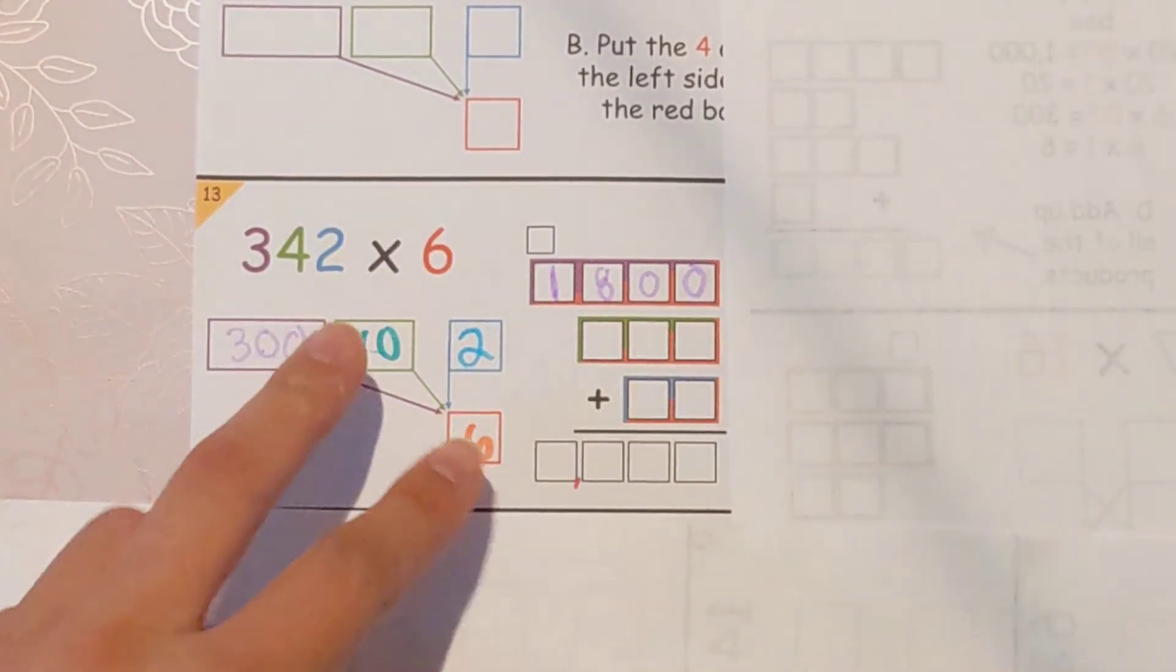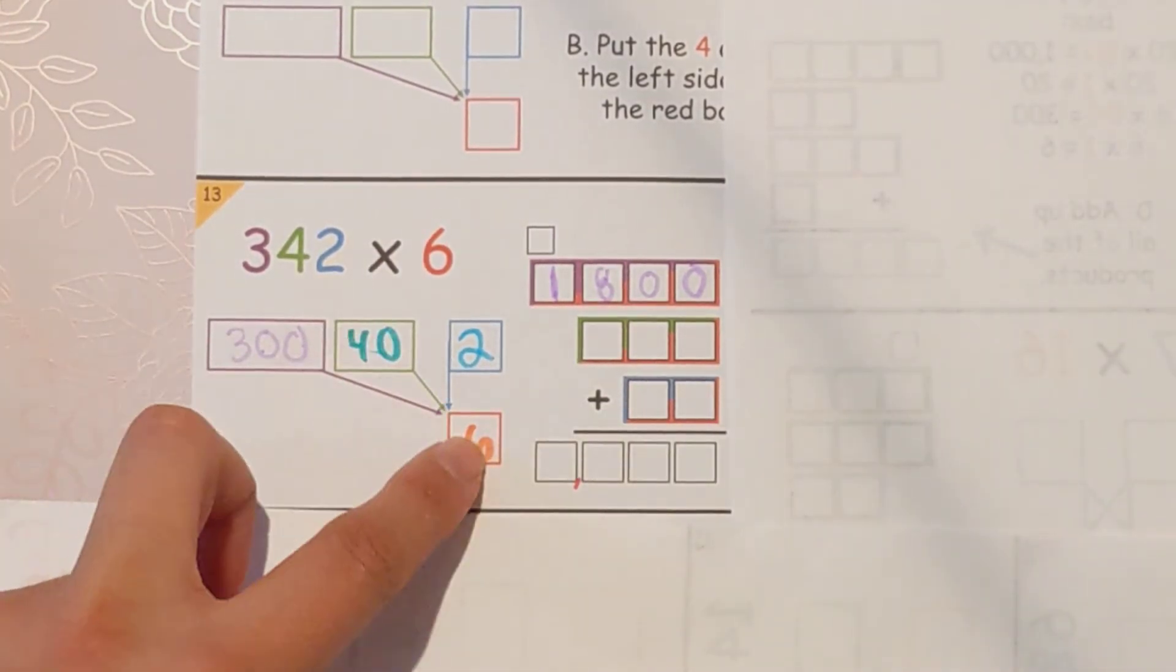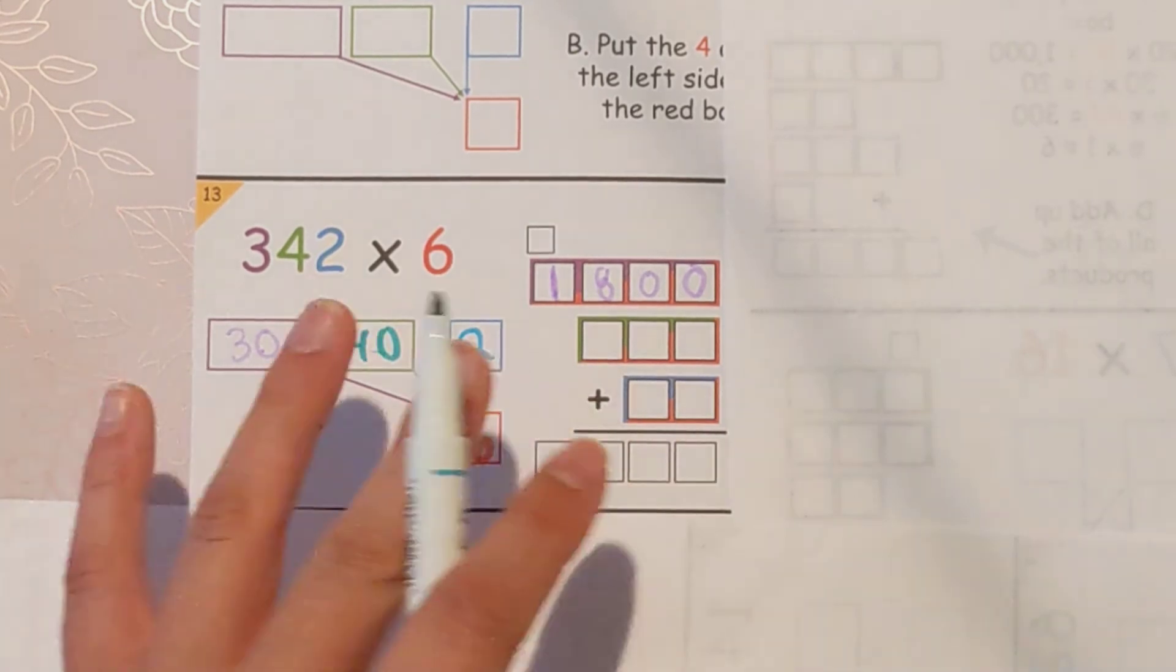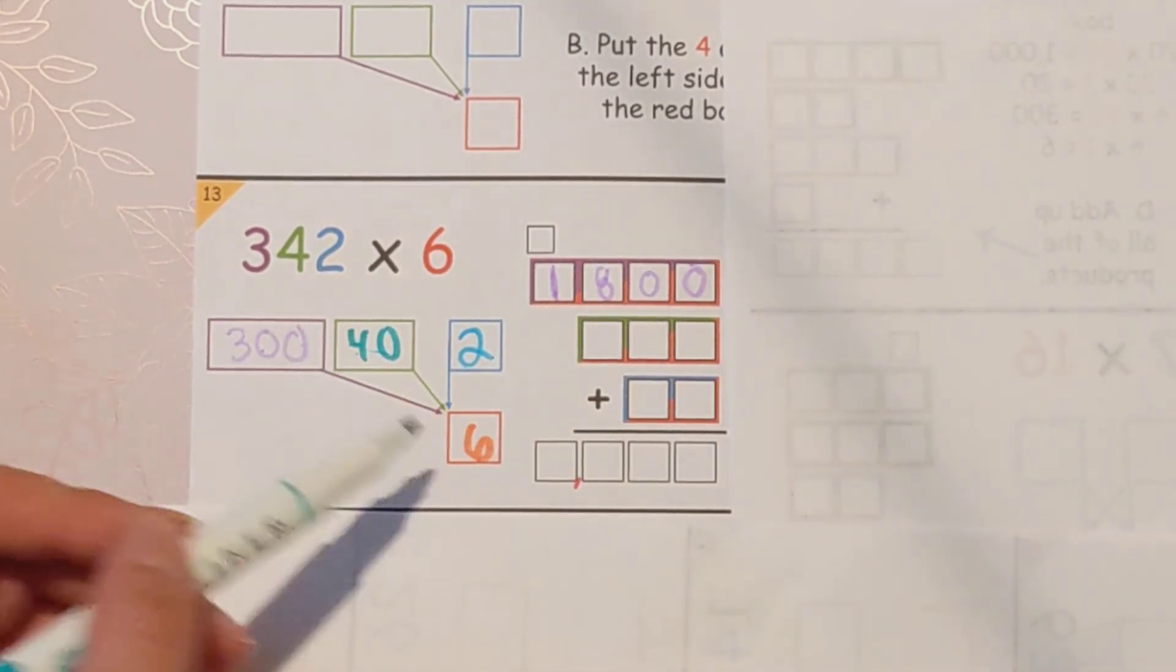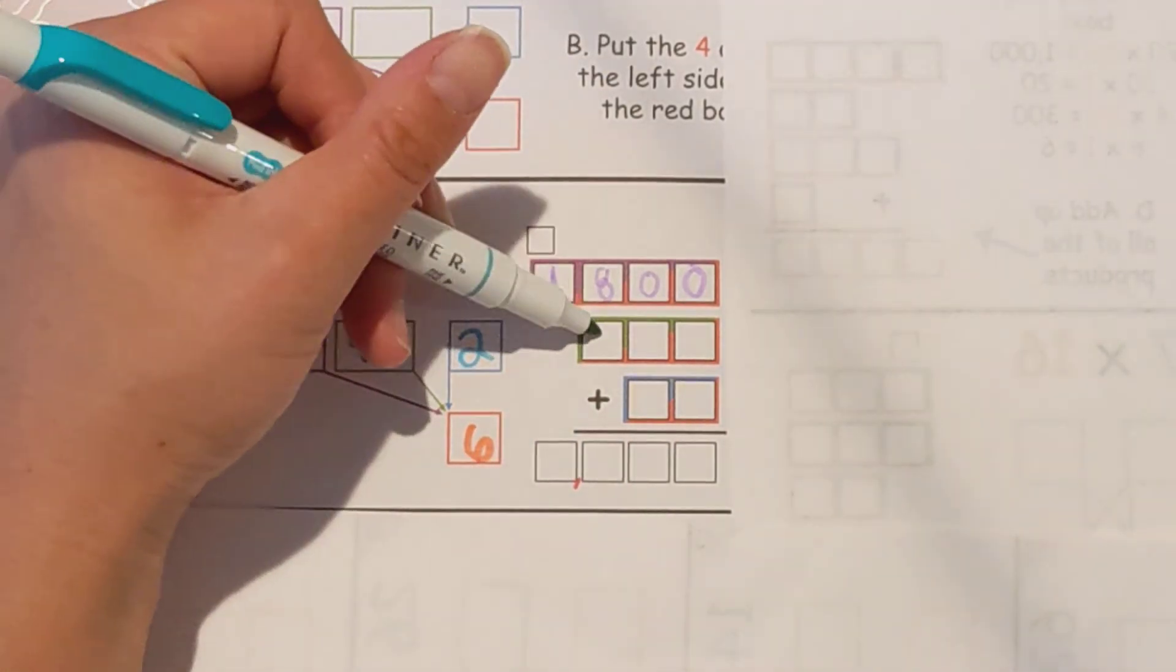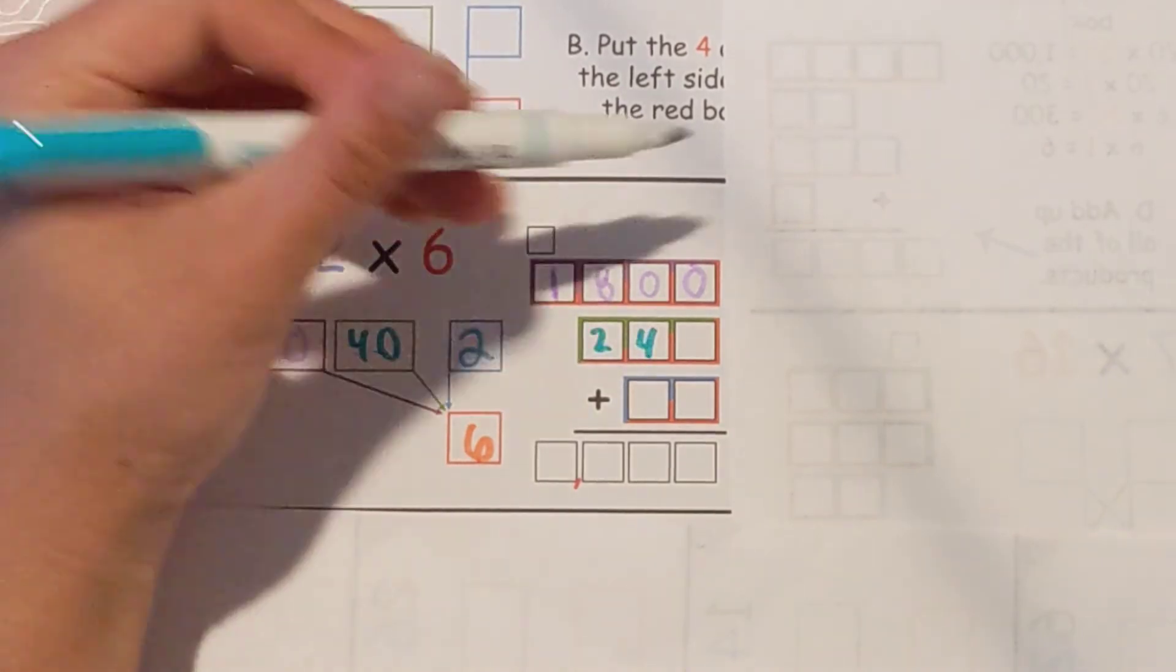Now we'll come down to the green versus red, and we'll do 40 times six. Again, forget about the zero. Just do four times six, which is 24, and then stick the zero back on.